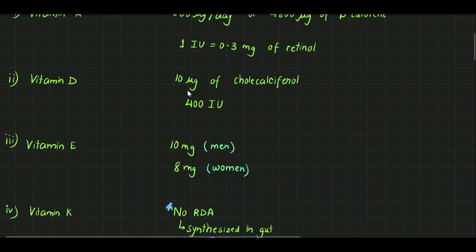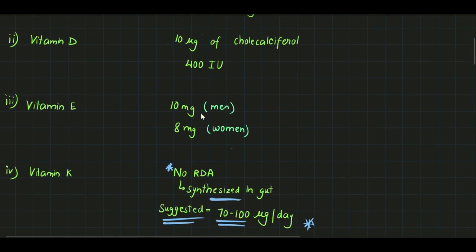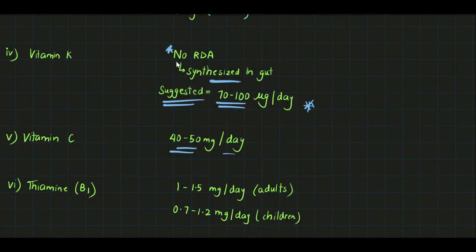For vitamin D, it is 10 micrograms of cholecalciferol or 400 international units. For vitamin E, it is 10 milligrams for men and 8 milligrams per day for women. Vitamin K has no RDA since it is synthesized in the gut.